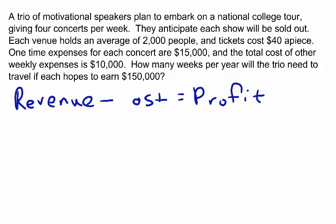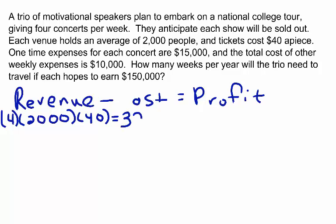Let's determine the weekly revenue. We know that they give four concerts per week, and that each concert is at a venue that holds an average of 2,000 people. We also know that tickets are $40 apiece. So each week, this is our revenue — the money that we have coming in. Total revenue is $320,000 each week. How many weeks? We don't know yet, so let's call that X.